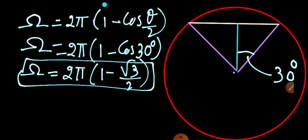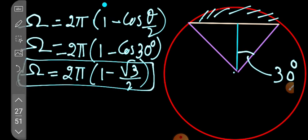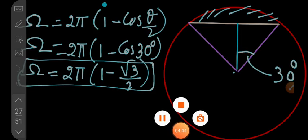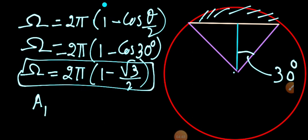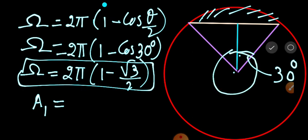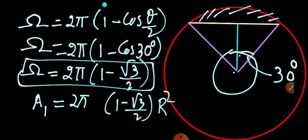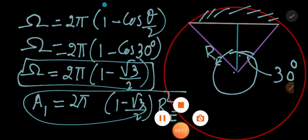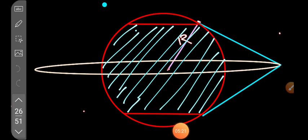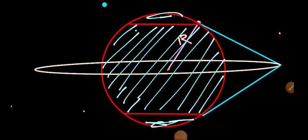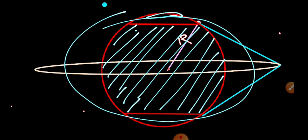With this solid angle omega, we can find the surface area of the uncovered cap. Using the relation — total solid angle is 4π corresponding to total surface area 4π Re² — the uncovered area A1 equals 2π(1 minus root 3 by 2) times Re². Similarly, there is another uncovered area A2 on the opposite side. Both A1 and A2 must be subtracted from the whole Earth's area.